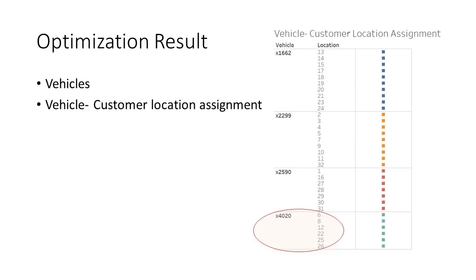The results showed the best combination of vehicles and routes with a total minimum cost. For example, the number 4020 vehicle will service number 6, 8, 12, 22, 25, and 26 customer locations.